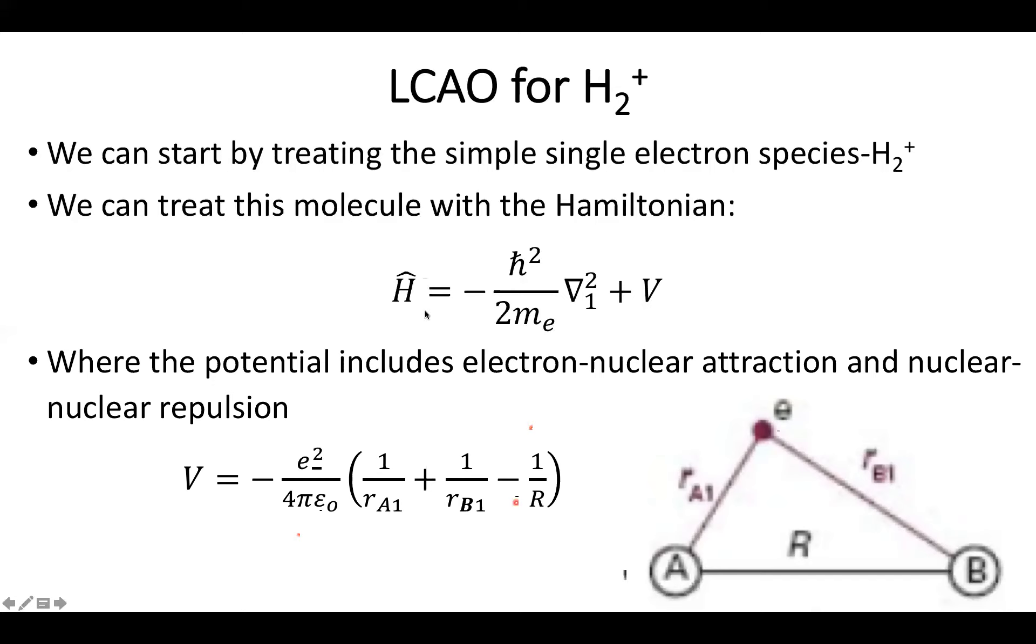So this generates our Hamiltonian, a little bit too messy, but not too bad. But we also have the other part of our Schrödinger equation. We now have a workable Hamiltonian. Turns out we also need a working wave function.